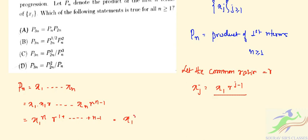So the summation gives us P_n = X_1^n · R^(n(n-1)/2). That is the expression for P_n.